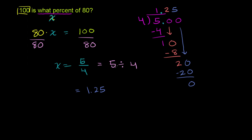5 over 4 is the same thing as 5 divided by 4, which is equal to 1.25. So we could say 100 is 1.25 times 80, or 1.25 of 80. But we still haven't expressed it as a percentage. This is really just as a number, as a decimal. It's a whole number and a decimal. It would be a mixed number if we didn't do it as a decimal. It's 1 and 1 fourth, or 1 and 25 hundredths.